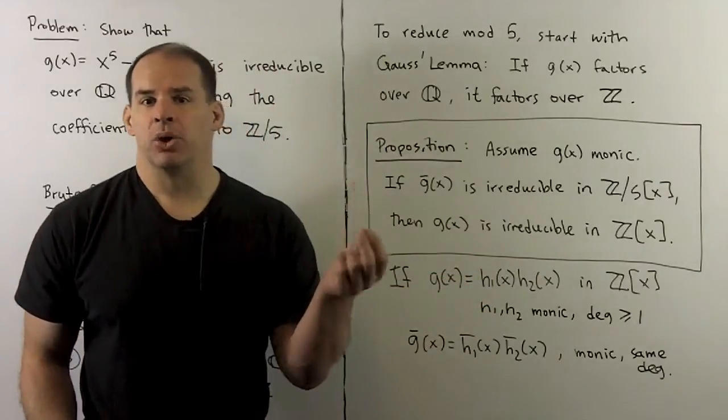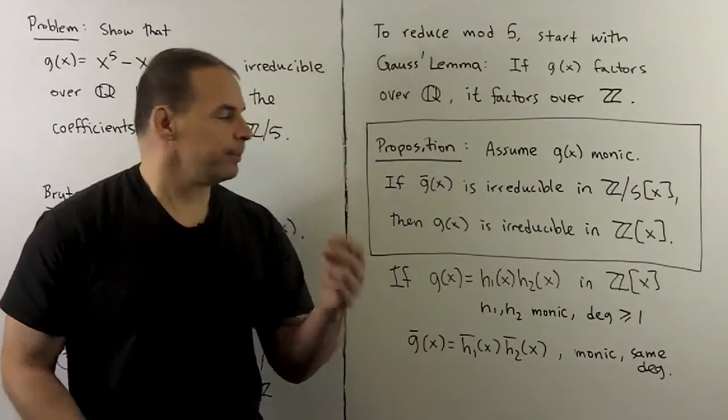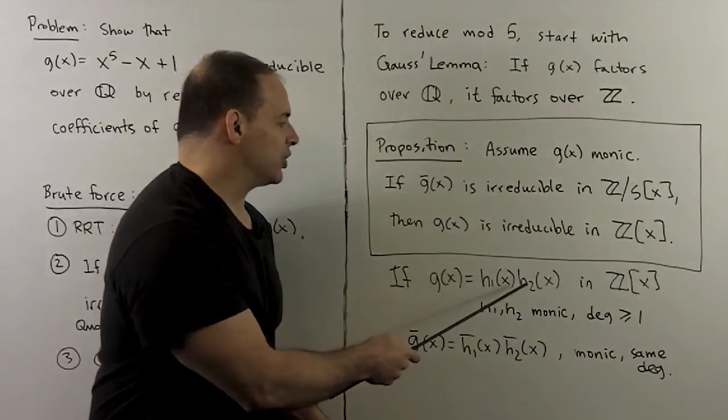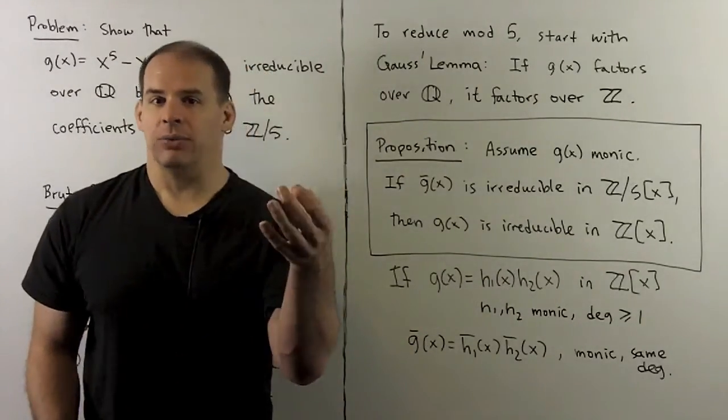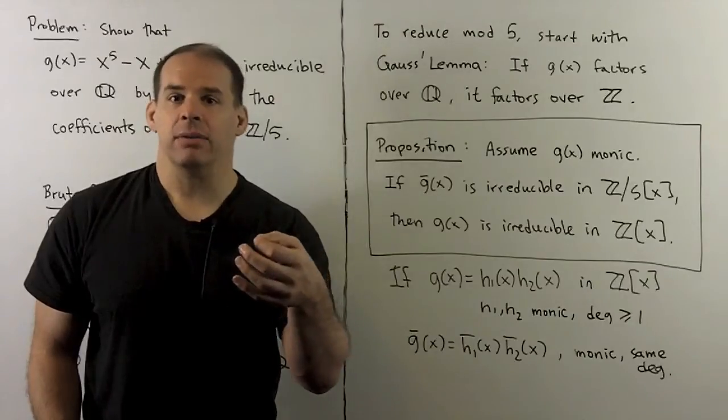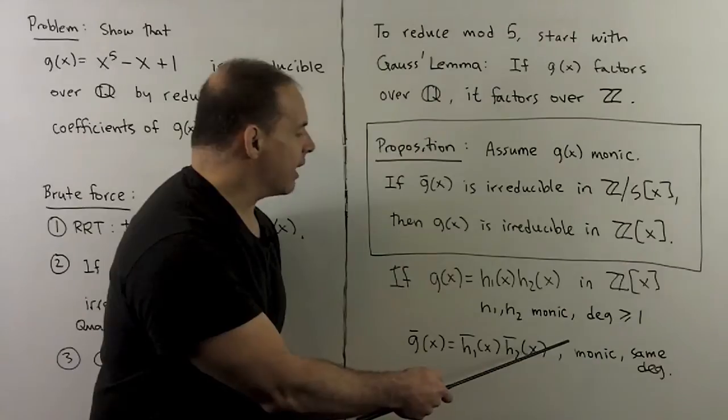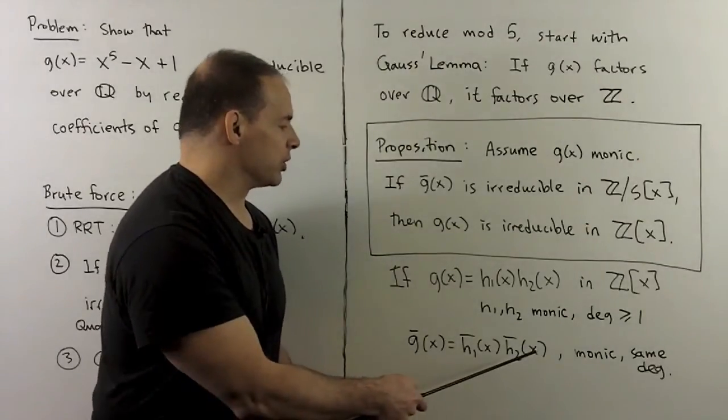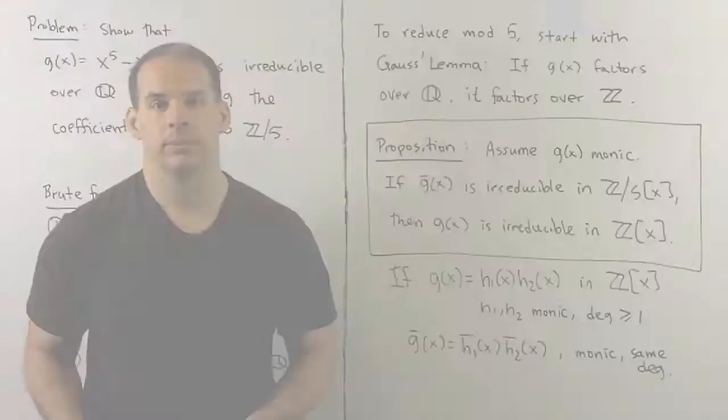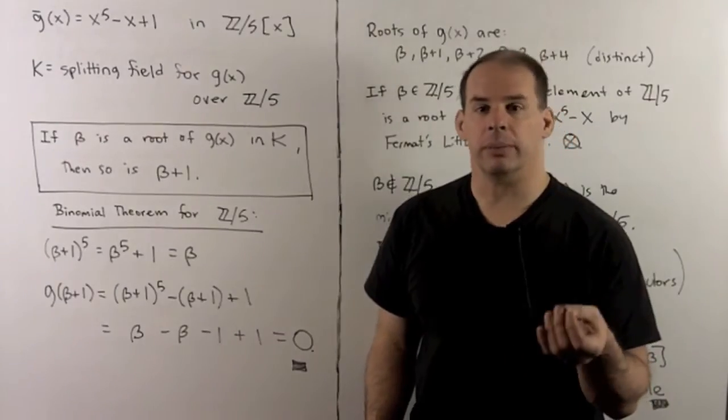Now, let's suppose we have a non-trivial factorization of g, so as h one and h two. If we reduce modulo five, we're still going to have a factorization over Z mod five. So this couldn't be irreducible to start with.